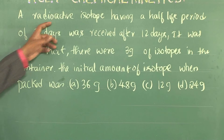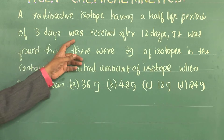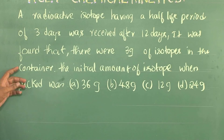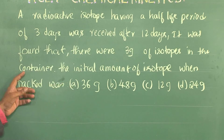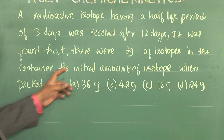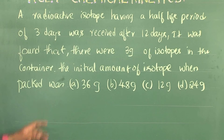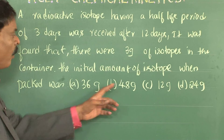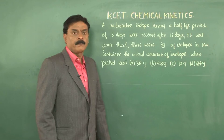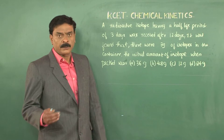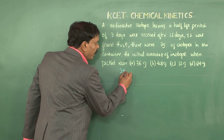A radioactive isotope having a half-life period of 3 days was received after 12 days. It was found that there were 3 grams of isotope in the container. The initial amount of isotope when packed was: 36 grams, 48 grams, 12 grams, or 24 grams. Radioactive disintegration is a first order reaction.